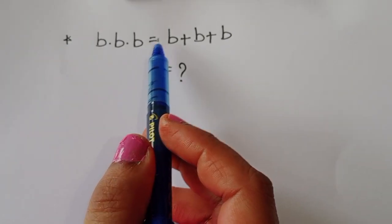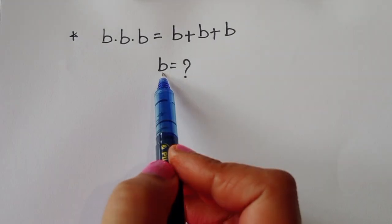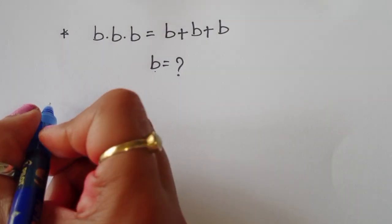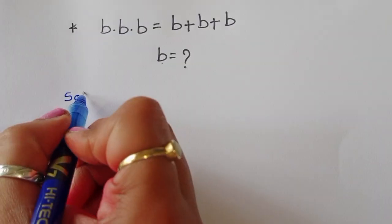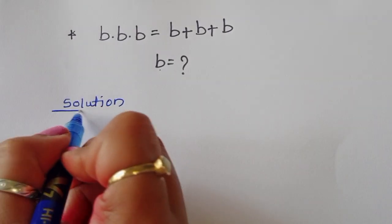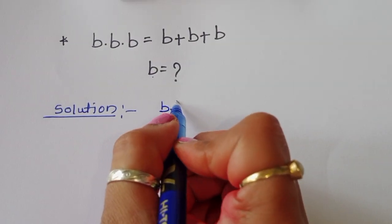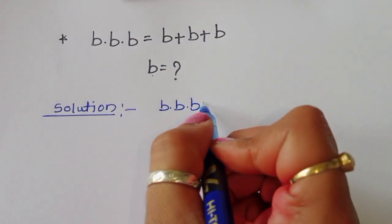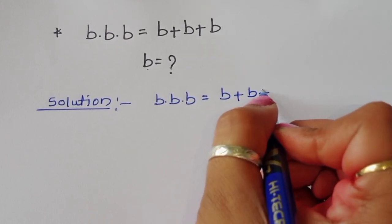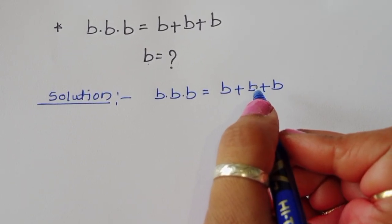The problem is: b times b times b is equal to b plus b plus b. We have to find out the value of b. Let's see the solution.